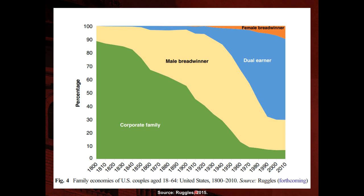In the US, a graph from Steve Ruglis's 2015 paper shows how the organization of families changed. Around 1800, about 90% of families were 'corporate families' — those living on small agricultural land where all family members worked together. By around 1910 this was still around 50%, but after that you start to see an increase of families in which the husband is the one working outside the household, bringing resources to the family — the male breadwinner model.